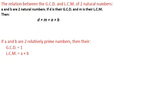There is an important relation between the GCD and the LCM of two natural numbers. If we have two numbers A and B, where D is their GCD and M is their LCM, then the GCD times the LCM equals the product of the two numbers: D times M equals A times B. If two numbers are relatively prime, their GCD is 1, and therefore their LCM is simply the product of the two numbers.